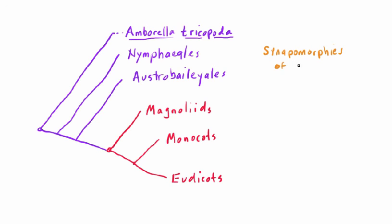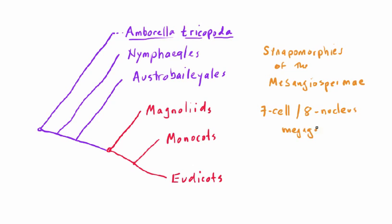By this point you might be asking for synapomorphies whenever we talk about a good monophyletic taxon like the mesangiosperms. There are some good synapomorphies of the mesangiospermi — for example, you could look at the megagametophyte. Mesangiosperms have exactly 7 cells and 8 nuclei in the megagametophyte, and this is true for Magnoliids, Monocots, and Eudicots. All of the ANA plants have a somewhat different structure: Amborella has 8 cells and 9 nuclei, while Austrobaileyales and Nymphaeales have 4 cells and 4 nuclei.